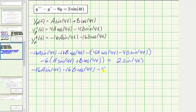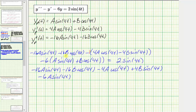gives us minus four A cosine four t, plus four B sine four t. Then distributing negative six gives minus six A sine four t, minus six B cosine four t. Again this equals two sine four t.